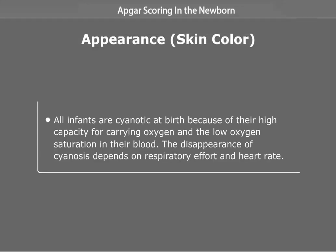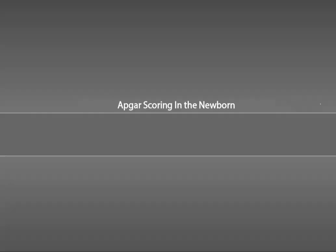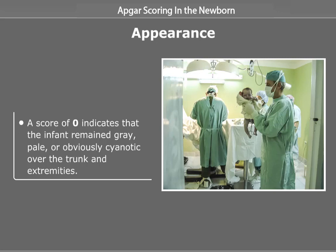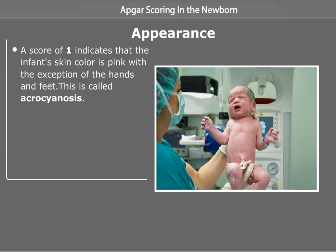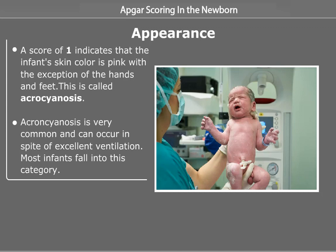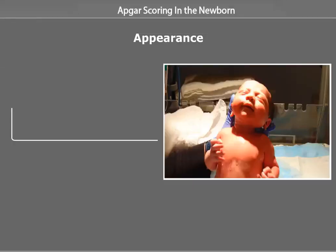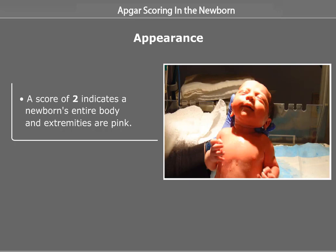All infants are cyanotic at birth because of their high capacity for carrying oxygen and the low oxygen saturation in their blood. The disappearance of cyanosis depends on respiratory effort and heart rate. A score of 0 indicates the infant remained gray, pale, or obviously cyanotic over the trunk and extremities. A score of 1 indicates the infant's skin color is pink with the exception of the hands and feet — this is called acrocyanosis, which is very common. A score of 2 indicates the newborn's entire body and extremities are pink.